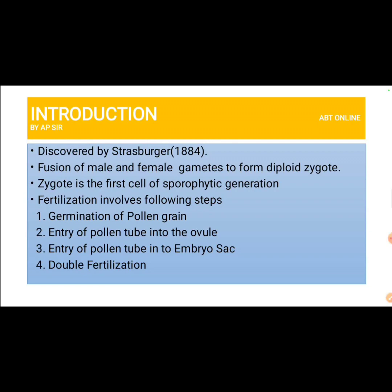Fertilization involves fusion of male and female gametes to form a diploid zygote, which is the first cell of the sporophytic generation. Fertilization is completed in four steps: germination of pollen grain, entry of pollen tube into the ovule, entry of pollen tube into the embryo sac, and the process of double fertilization.